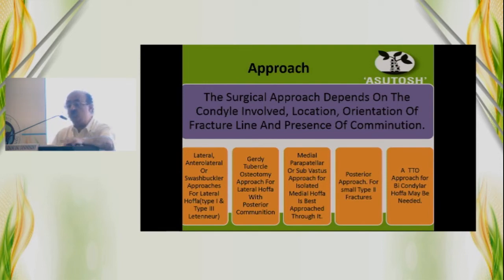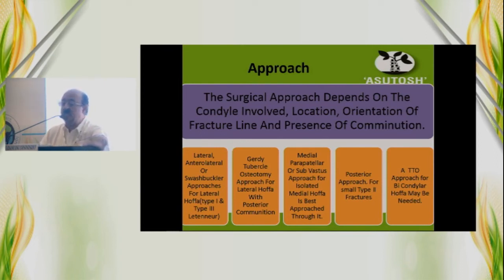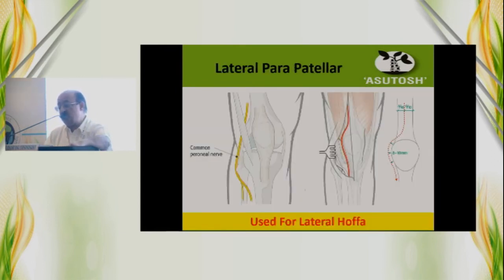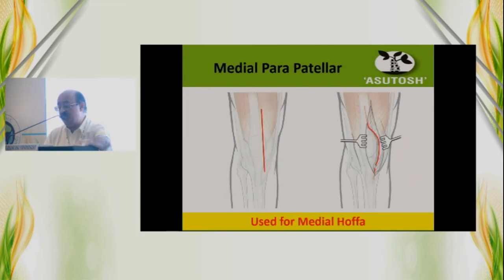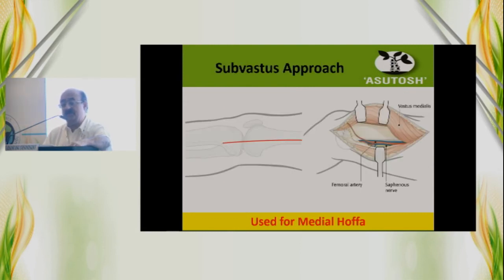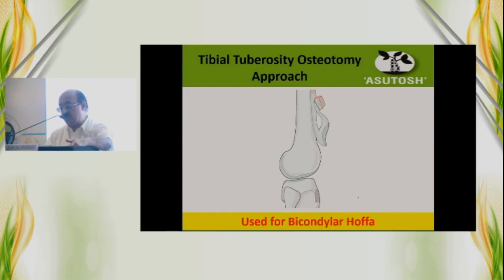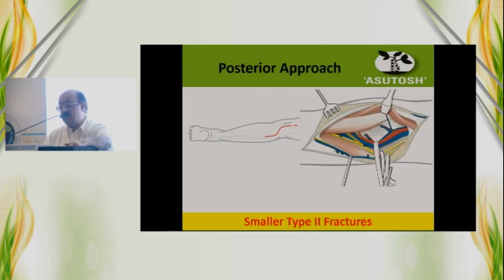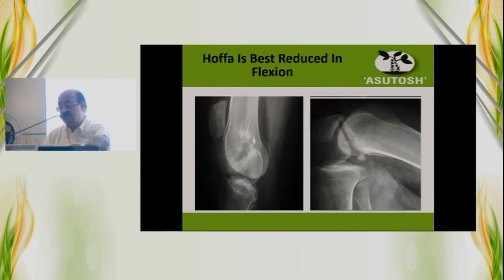For Type 2, the more posterior ones, a posterior approach may be used. In complicated situations like nonunion or malunion that need correction, a tibial tuberosity osteotomy gives good exposure. To summarize the approaches: lateral parapatellar for lateral Hoffa, medial parapatellar or sub-vastus for medial Hoffa, tibial tuberosity approach for complicated or bicondylar Hoffa, and occasionally a posterior approach for smaller fragments when screws are placed posterior to anterior.